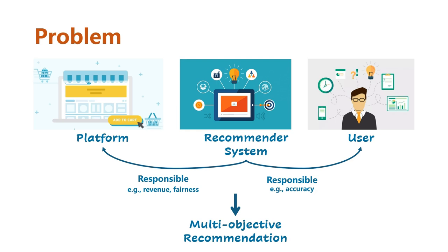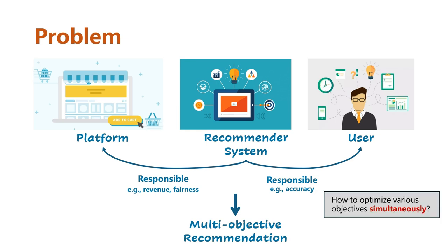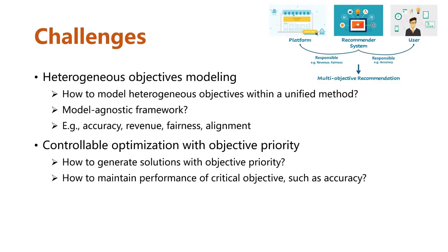The task then becomes a multi-objective recommendation, and the major problem is how to optimize various objectives simultaneously. There are two major challenges. First, the objectives are usually heterogeneous in this scenario, so how to model various objectives within a unified and model-agnostic method is challenging. The second challenge is controllable optimization with objective priority — the system designer may have specific priority among those objectives, so the model should be optimized toward a status with a priority weight.